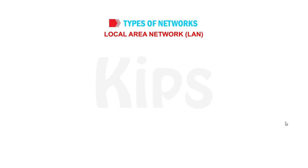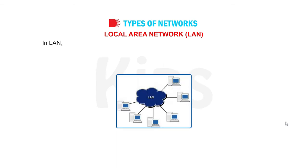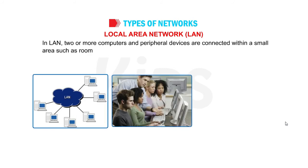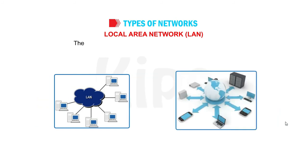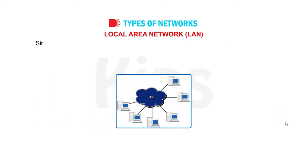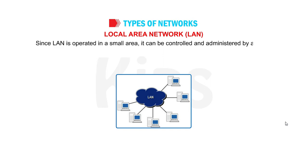Local Area Network, LAN. In LAN, two or more computers and peripheral devices are connected within a small area, such as a room or office building. In Local Area Network, computer terminals are physically connected with wires. The data transmission speed is slow as compared to WAN. Since LAN is operated in a small area, it can be controlled and administered by a single person or an organization.